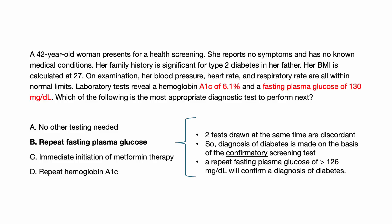A hemoglobin A1c of at least 6.5%, a fasting plasma glucose of at least 126, or a two-hour plasma glucose of 200 or greater during an oral glucose tolerance test. The two abnormal test results can be from the same sample — fasting plasma glucose and hemoglobin A1c drawn at the same time — or two separate samples. If the two tests drawn at the same time are discordant, such as in this patient, then the test that is higher than the diagnostic threshold should be repeated. The diagnosis of diabetes is made on the basis of the confirmatory screening test.